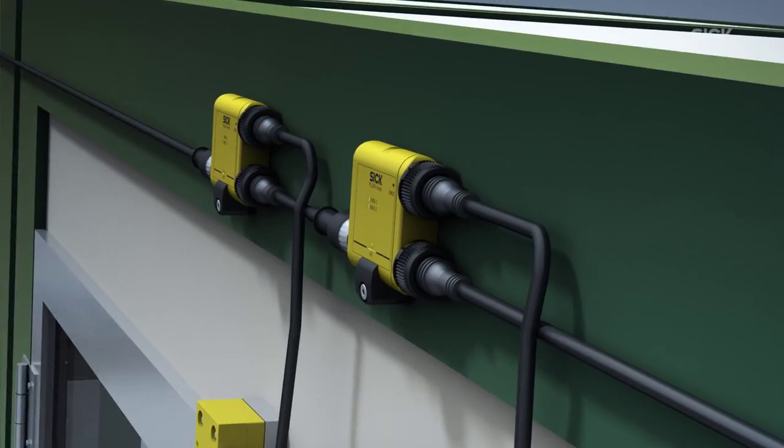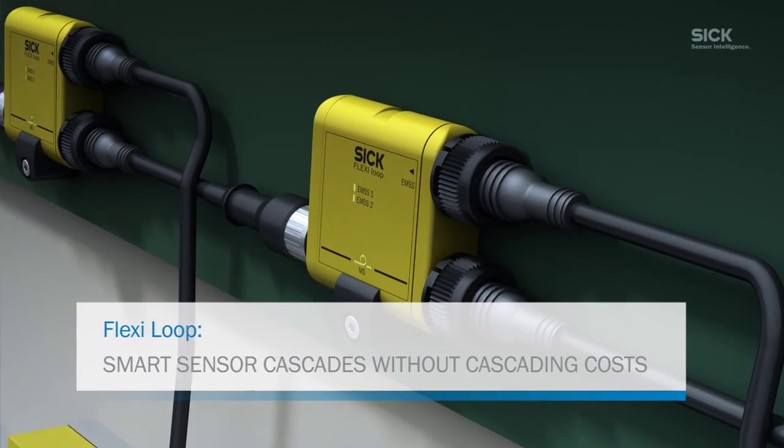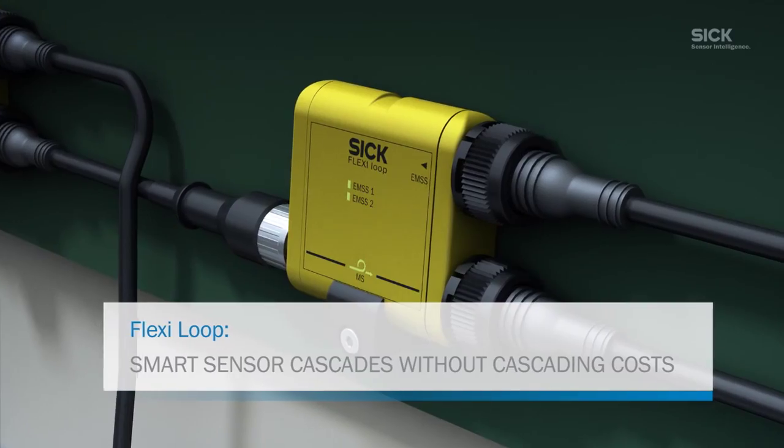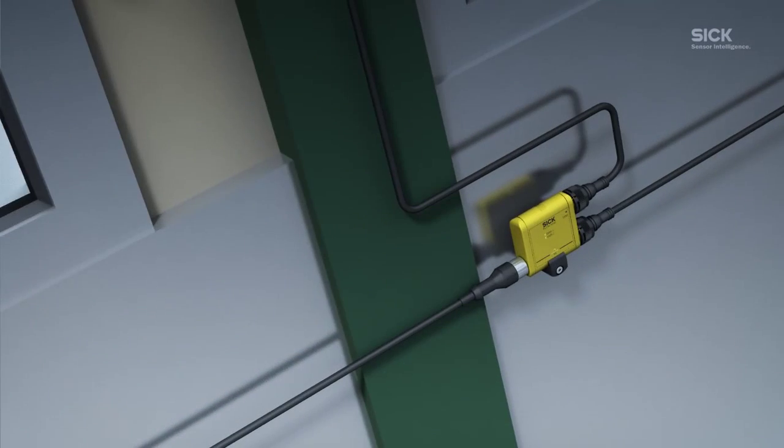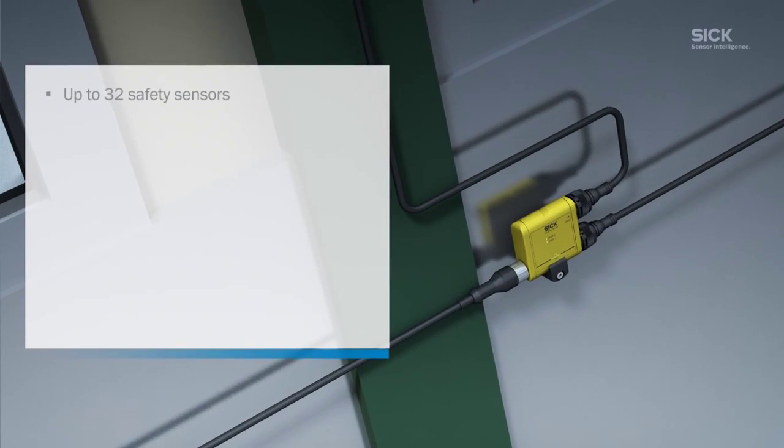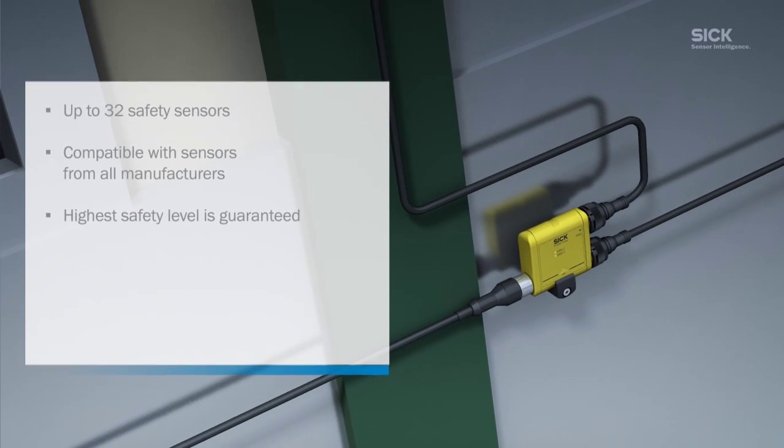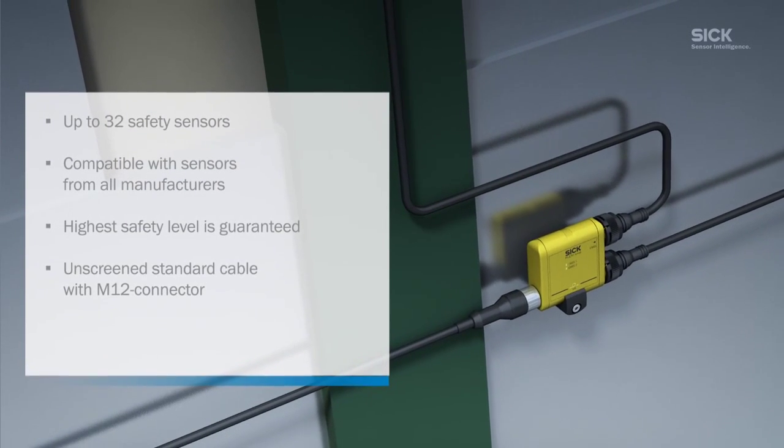With FlexiLoop, you can cascade up to 32 safety sensors from all major manufacturers. That means you can say goodbye to extensive cabling, but maintain maximum safety at a minimum cost.